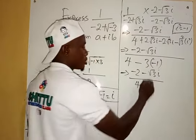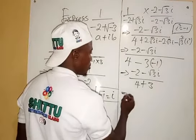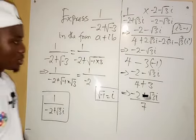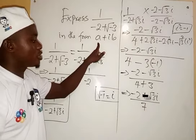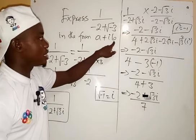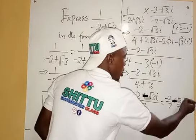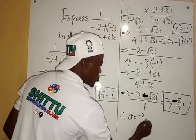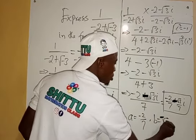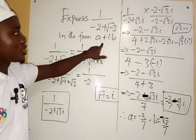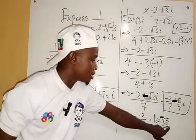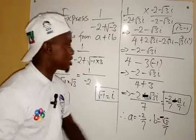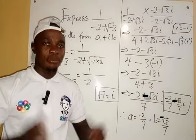So we now have minus 2 minus root 3 i divided by 7. We split this into the form a plus ib: a is minus 2 over 7, and b is minus root 3 over 7, because it is the part attached to i, while a stands alone. Thank you so much for watching, bye bye.